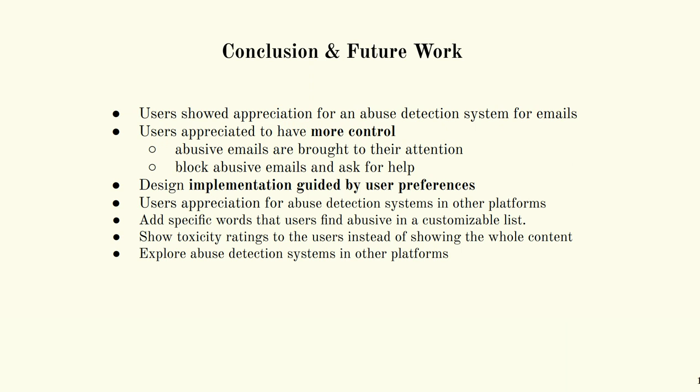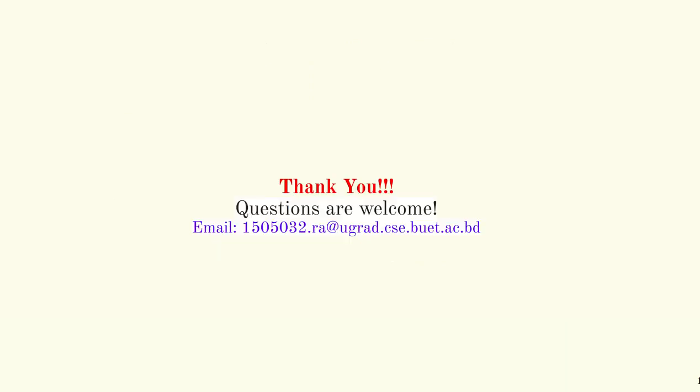We found that users appreciated the idea of an automated abuse detection system for emails. Users appreciated having more control over how abusive emails are brought to their attention and how they can ask for help when facing such emails. The design implementation was guided by user preferences, which is novel. In the future, we want to add a customizable list of specific words users find abusive, show toxicity ratings instead of the full content of abusive emails, and explore abuse detection systems on other platforms. Thank you, questions are welcome.